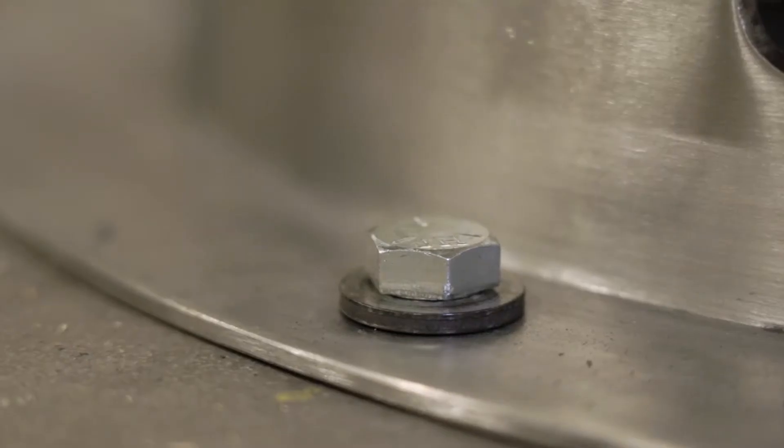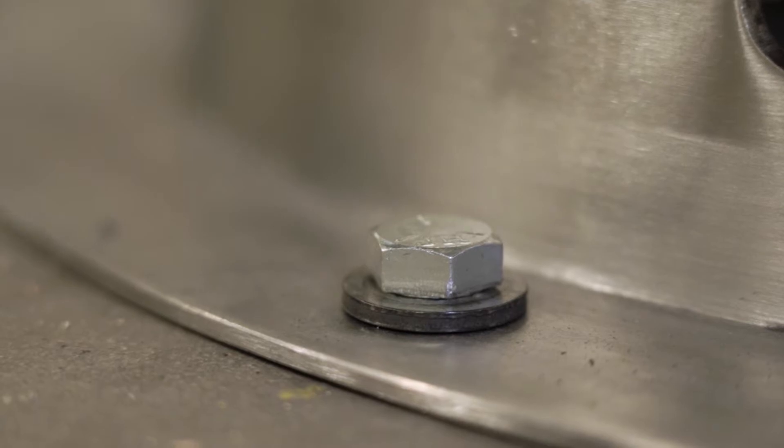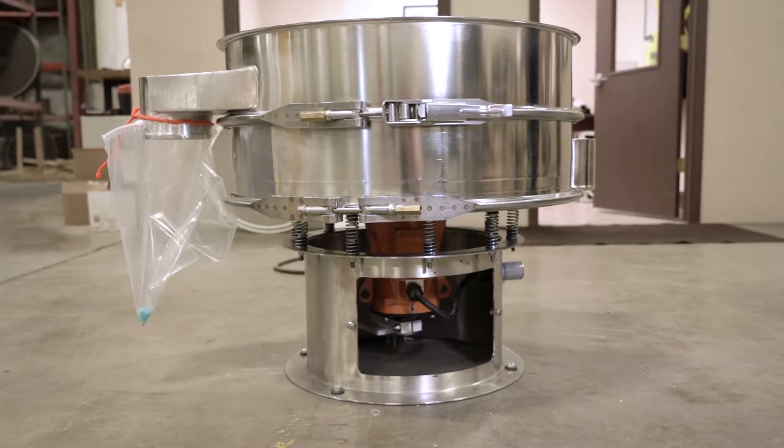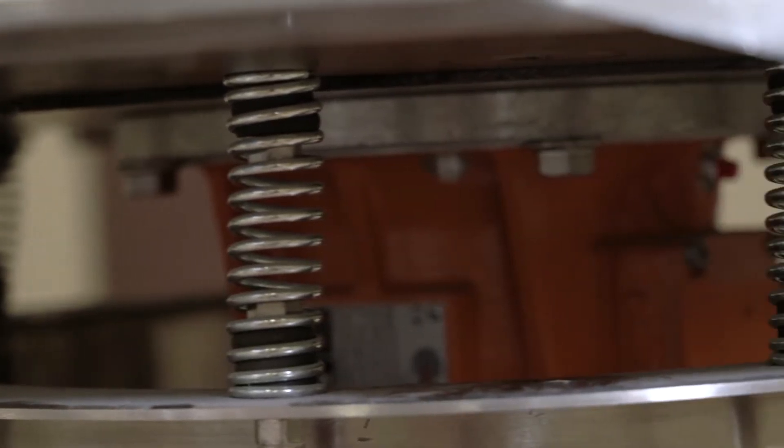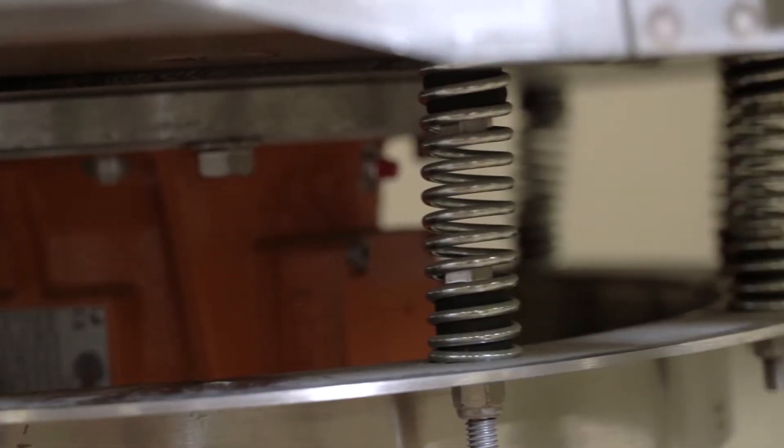When setting up your separator machine, it should be mounted to a solid surface. If the surface is not solid, the machine will start to move, applying sheer force to the springs and eventually leading to one or more springs failing.